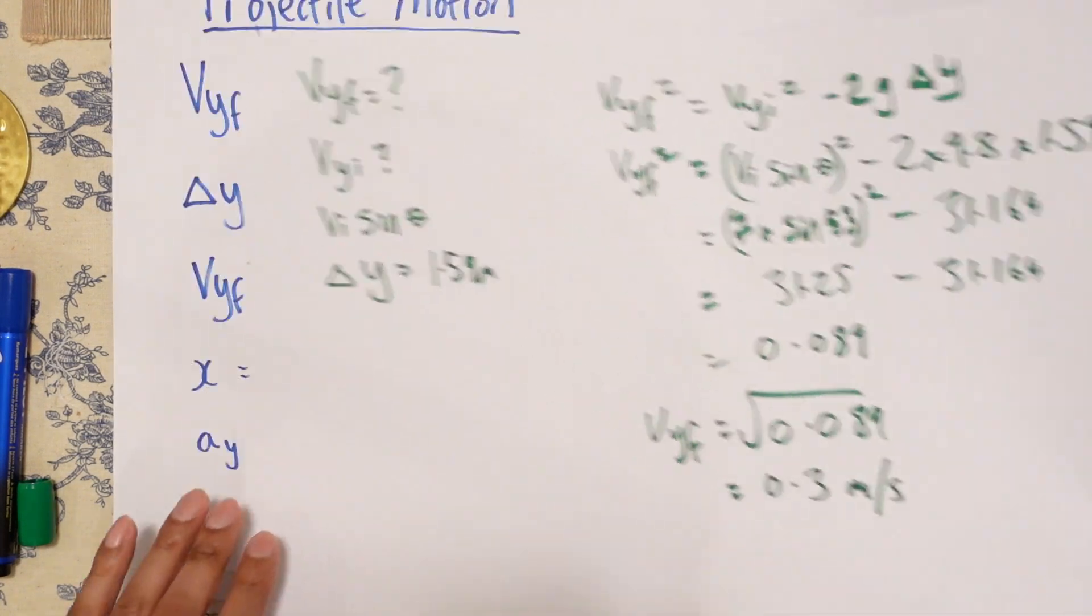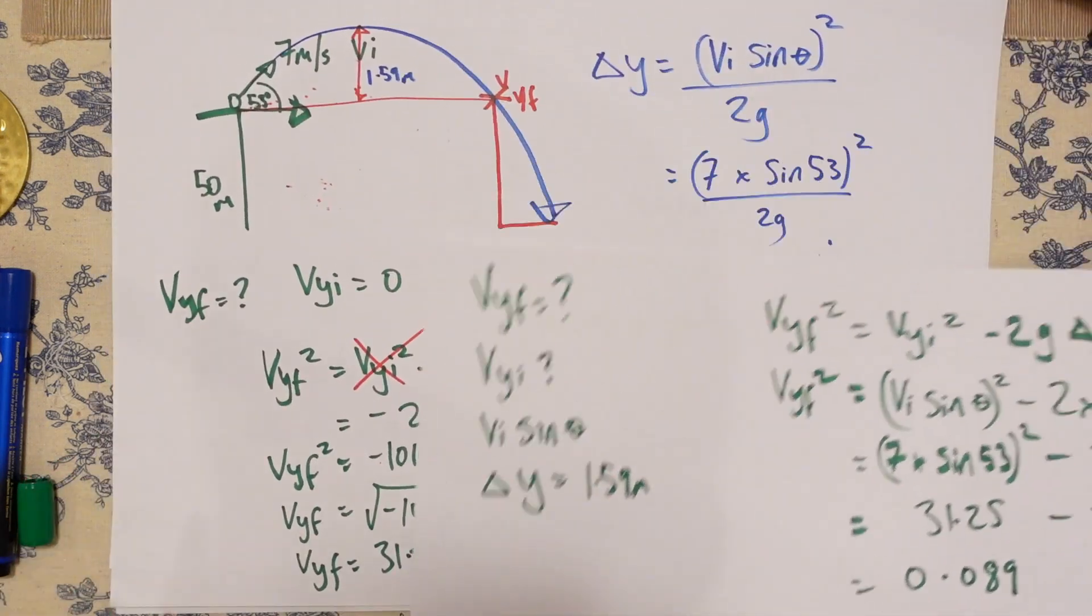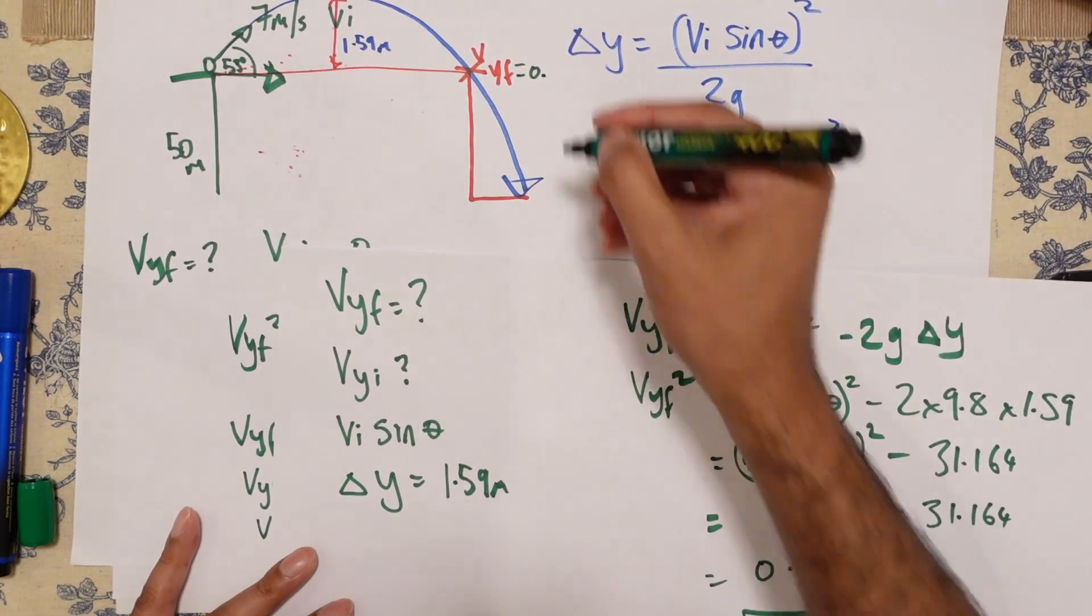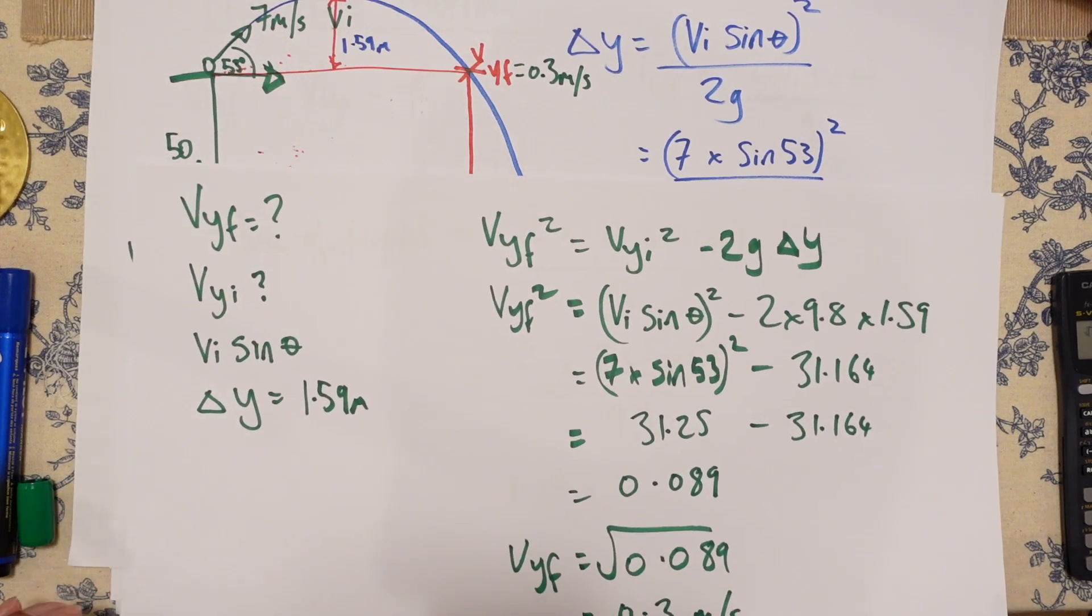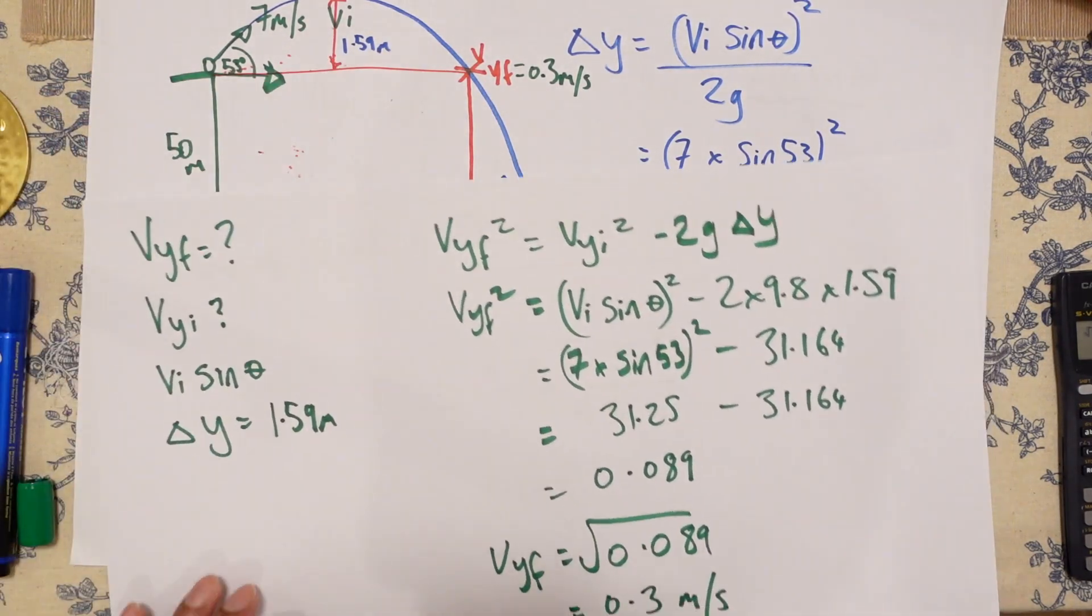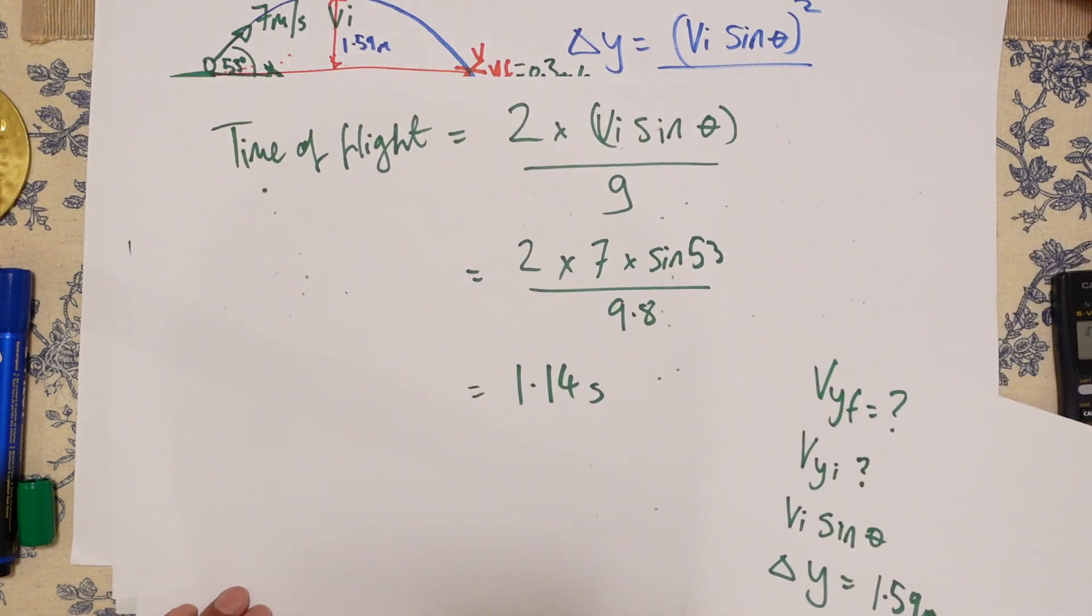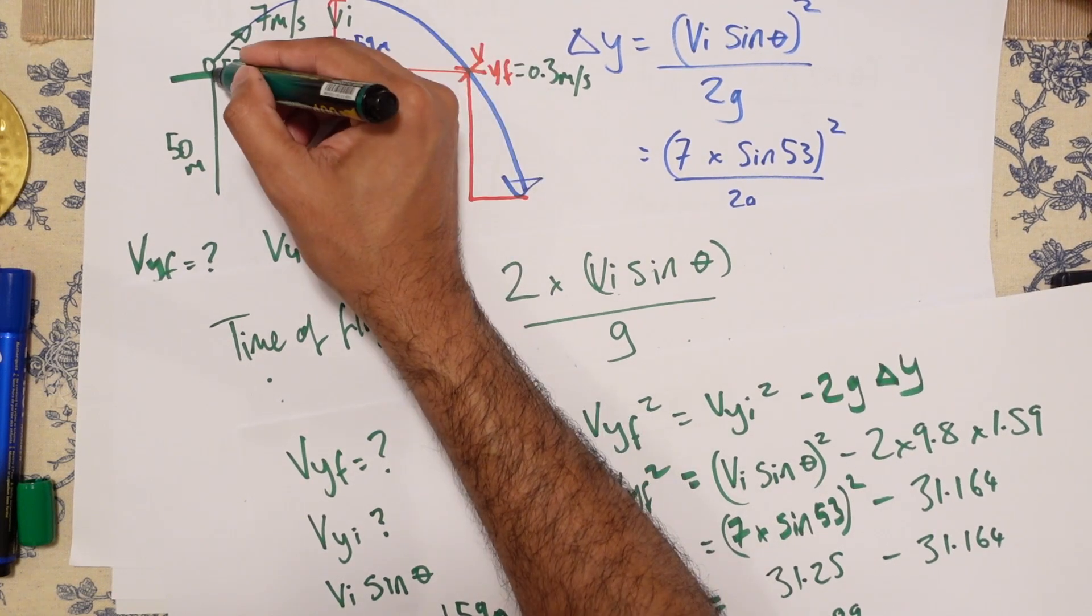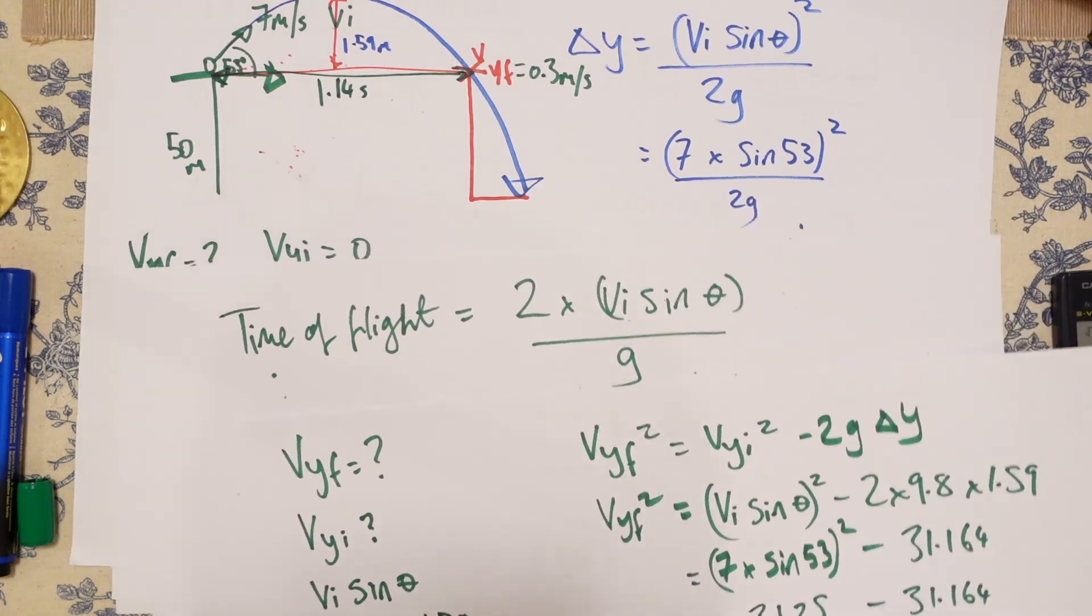So let's figure out what we have. So we've got that, which is 0.3 meters per second. We know that time, because we just worked it out. That's 1.14 seconds. So to get from there to there.